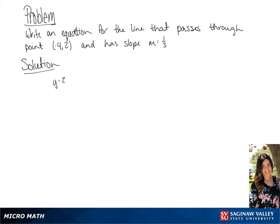We have the point negative 4, 2, and the slope 1/3, so we're going to use point-slope form.